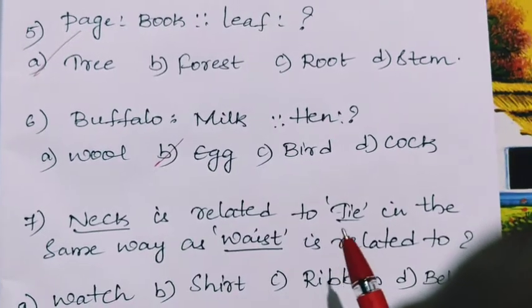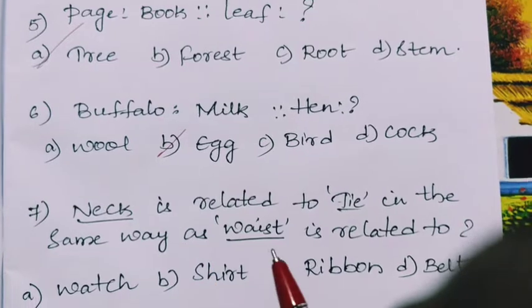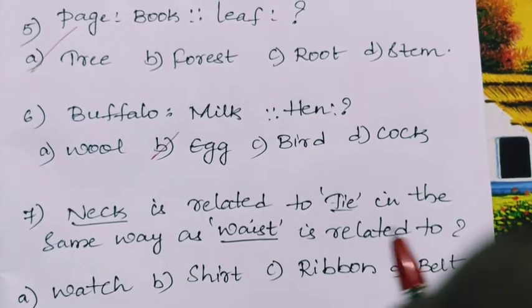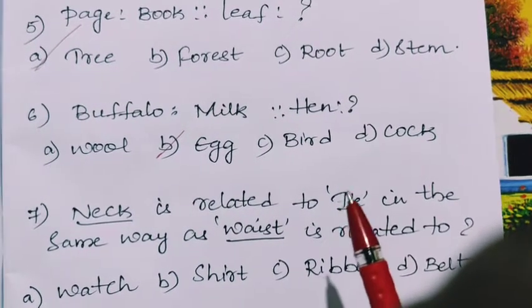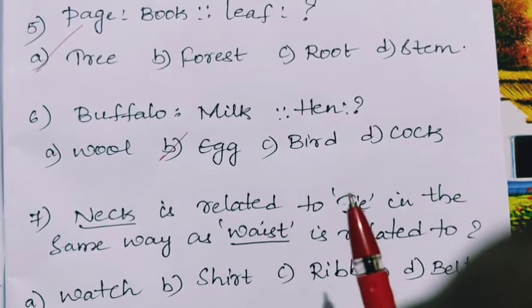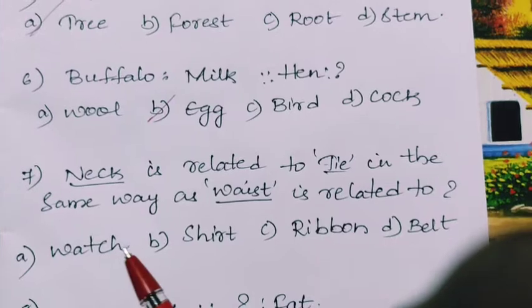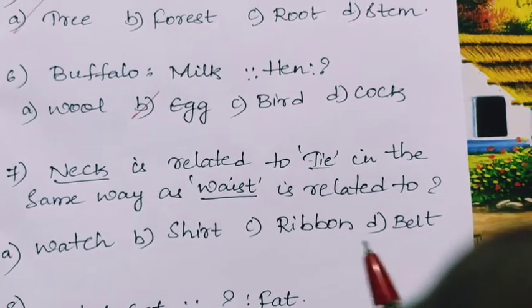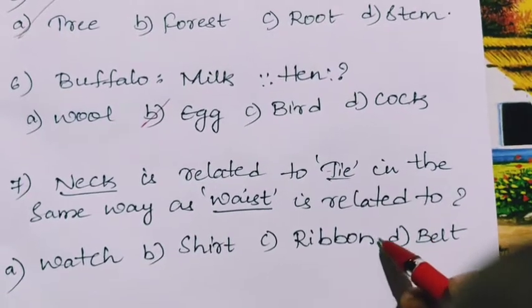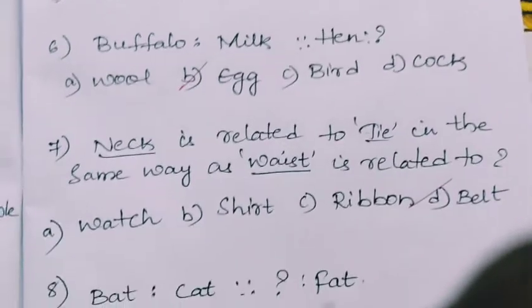Neck is related to tie in the same way as waist is related to what? So we tie tie to the neck and waist we tie watch, shirt, ribbon, belt. So belt, waist is to belt.